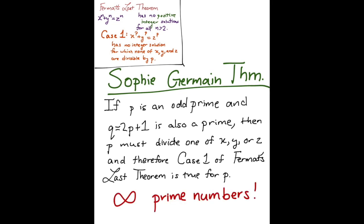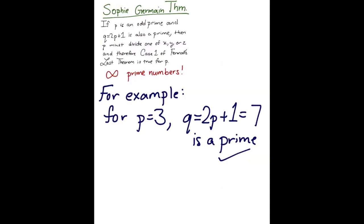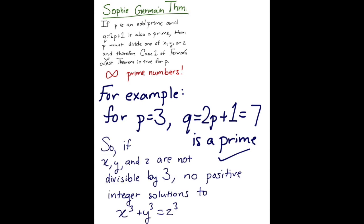Remember that there are infinite prime numbers, so she was able to prove a part of a case of Fermat's Last Theorem for infinite numbers. Wow, so to wrap our heads around what this means, let's take p equals 3. In this case, q equals 2p plus 1, which equals 7, which is also a prime. Hence, according to Sophie Germain, if none of x, y, or z are divisible by 3, there is no positive integer solution to x cubed plus y cubed equals z cubed.